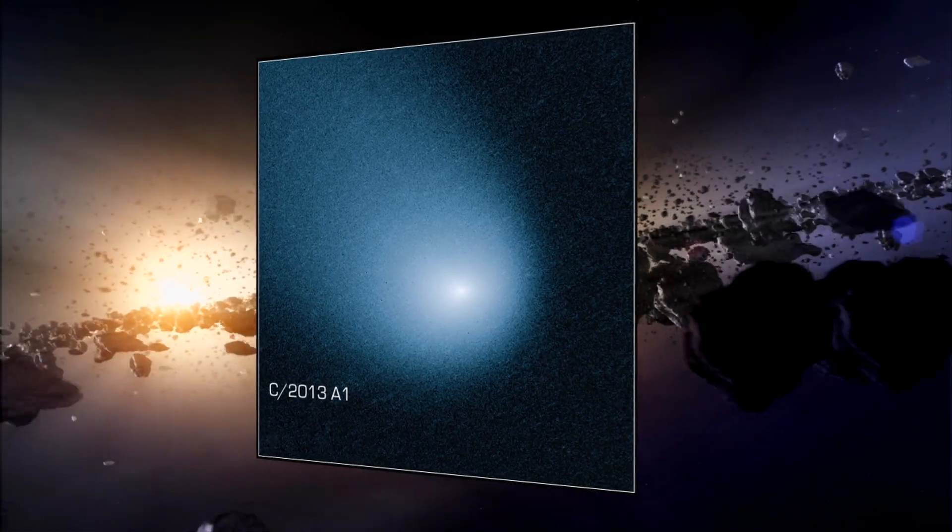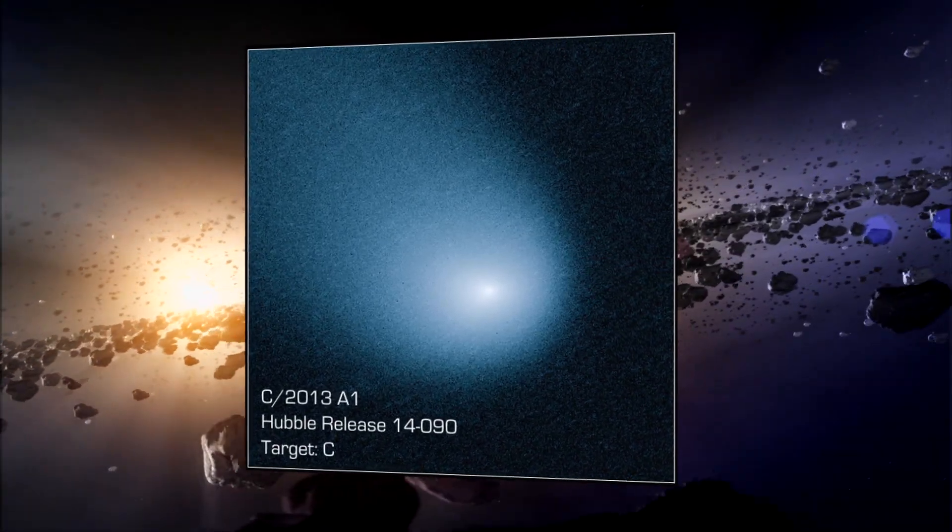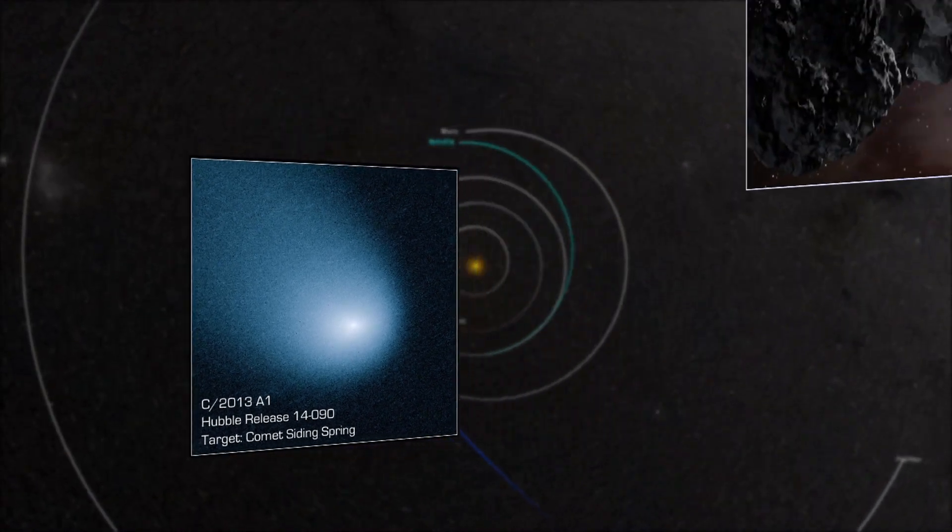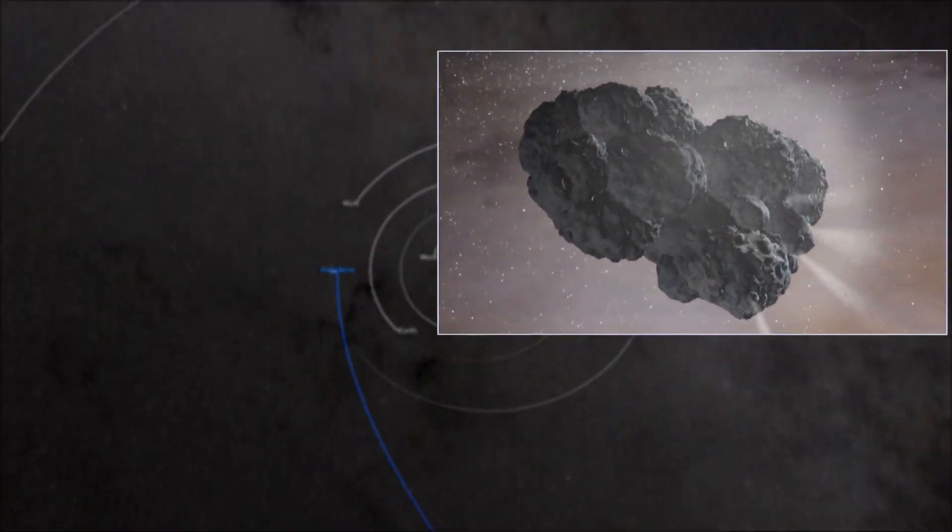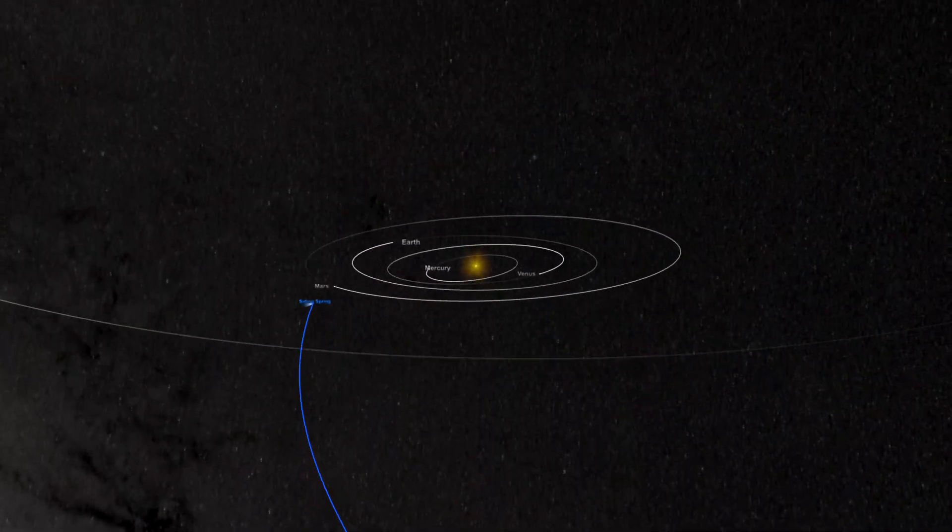Like C2013A1, better known as Comet Siding Spring. This chunk of frozen water and gas, with the estimated mass of a small mountain, left the Oort Cloud's southern hemisphere millions of years ago.